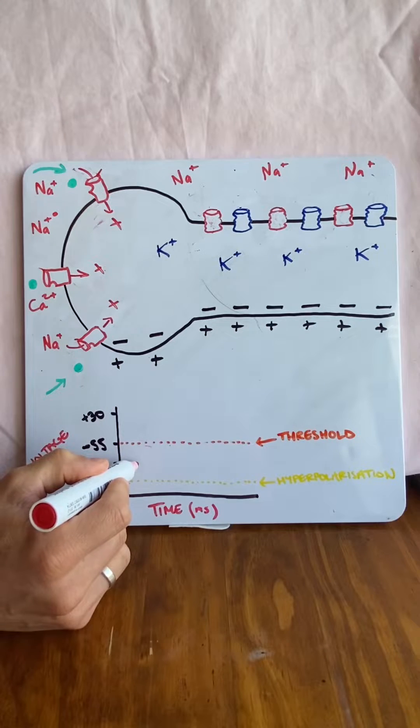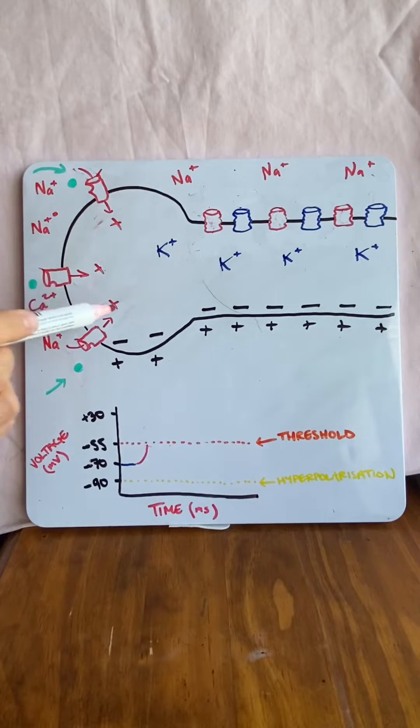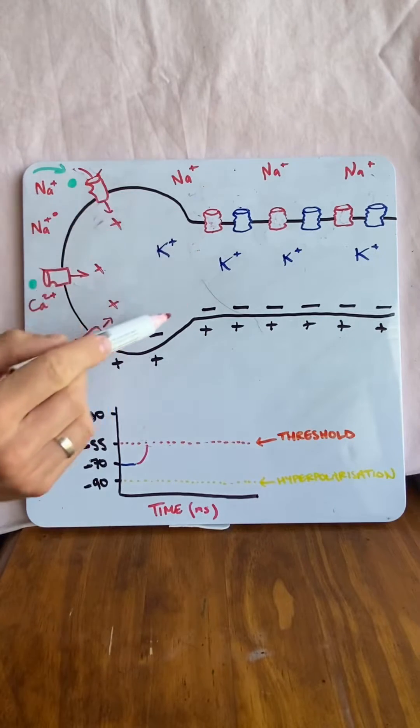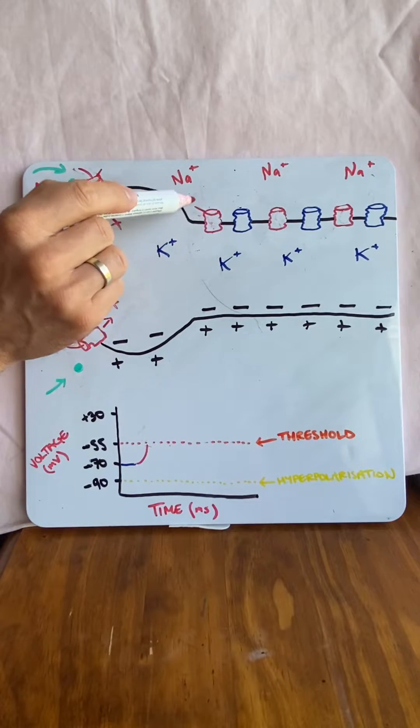If it moves from negative 70 to negative 55, negative 55 is the threshold. It's the key. The key to what? Well, if it becomes negative 55 around this area, it's going to open up the first voltage-gated sodium channel. That's the key to open it up.